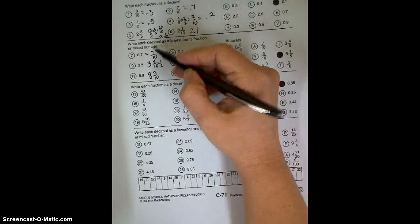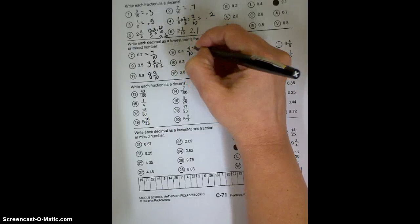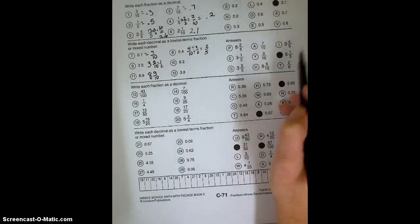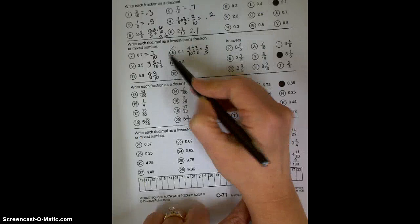This one would be 4 tenths, which could be reduced if we divided by 2 over 2. It would then be 2 fifths, which is probably the answer we're looking for. So if you wanted to do the puzzle, you would find 8 and write a T in it. But again, we're just going to keep going on.